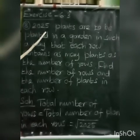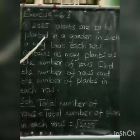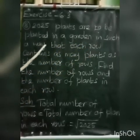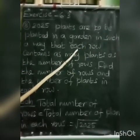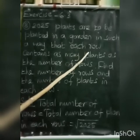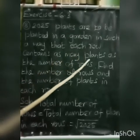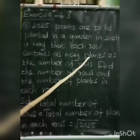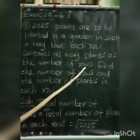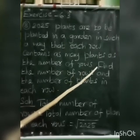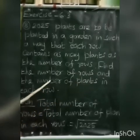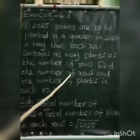Some plants are to be planted in a garden. Every row will be planted in a row. Some plants are to be planted, and how many rows have plants — one row will be planted in a row. We need to find the number of rows and the number of plants planted in each row.